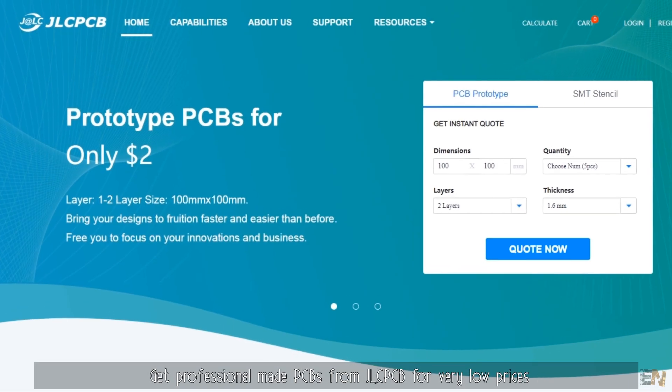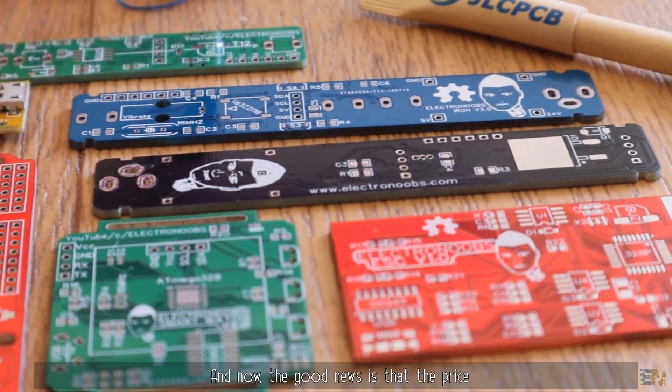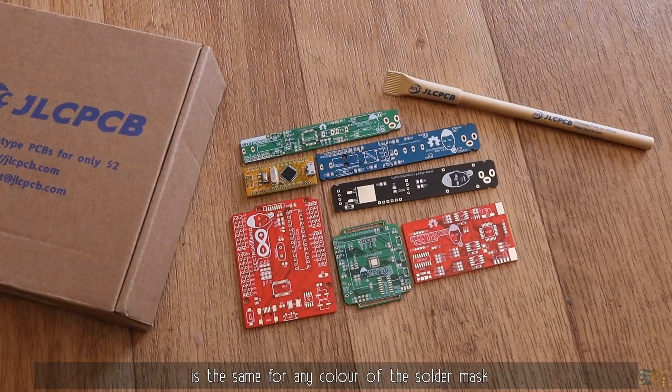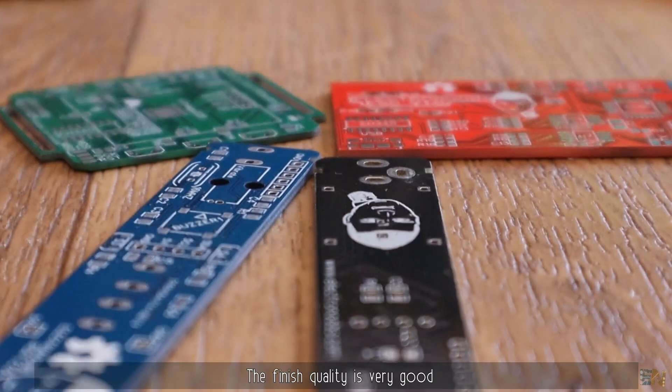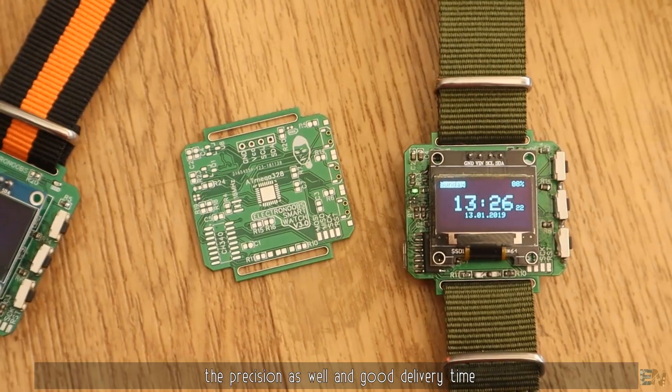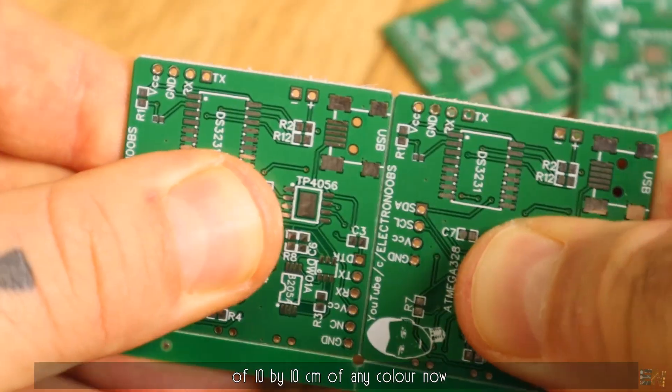Get professional made PCBs from JLCPCB for very low prices. The good news is that the price is the same for any color of the solder mask. The finish quality is very good, the precision adds well and good delivery time.